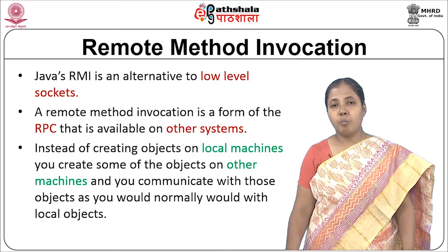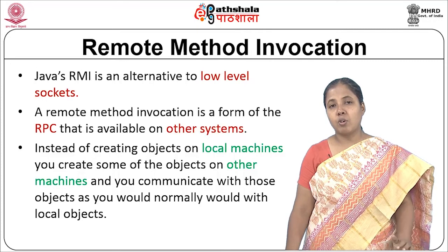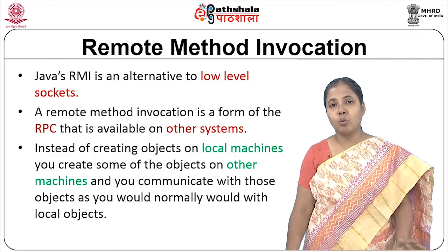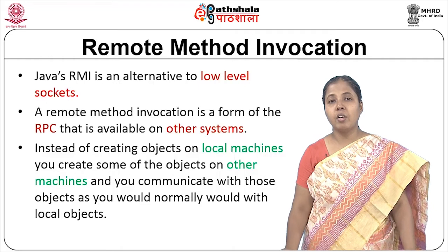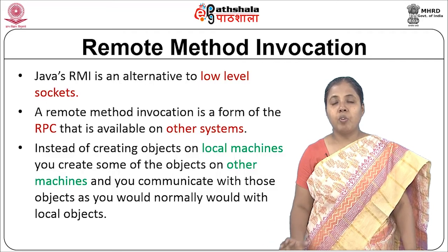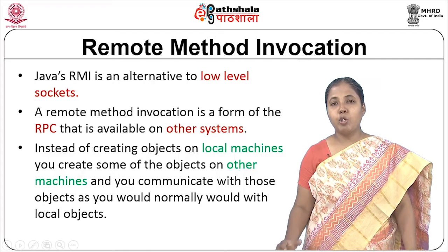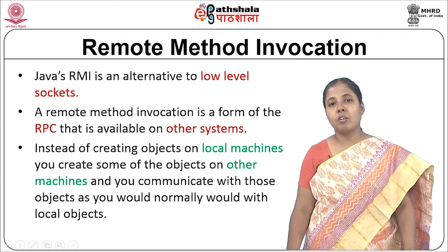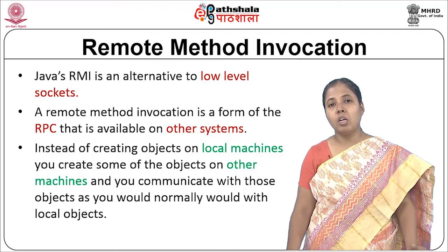The idea of RMI is to have remote objects running in a different address space, either local to the machine or in a remote machine. Using this RMI mechanism, one would be able to access the objects just like accessing a local object — we try to access a method that is running locally in the machine.